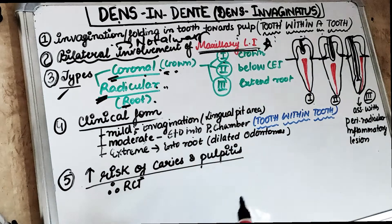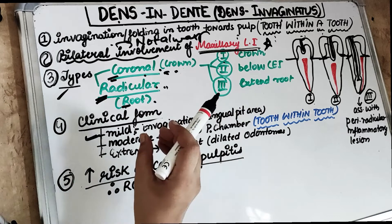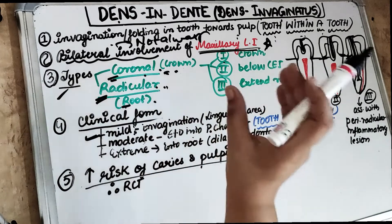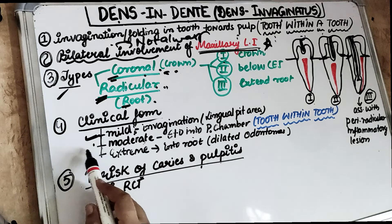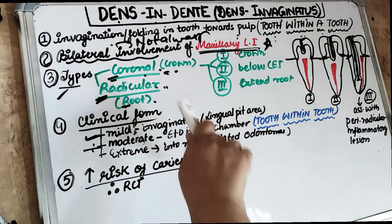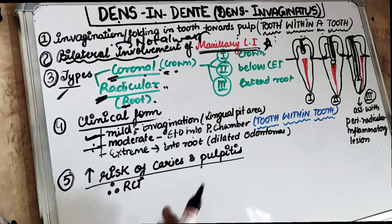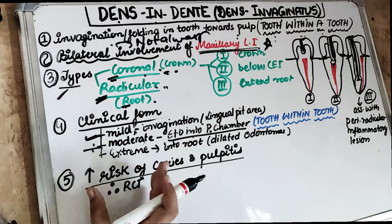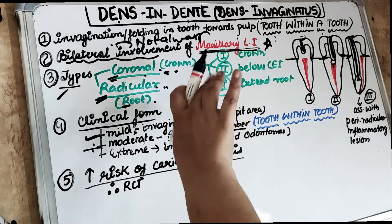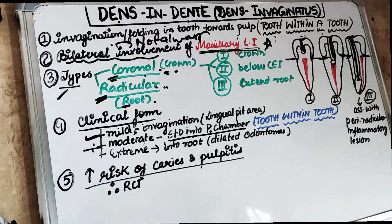Regarding the clinical forms: in mild cases, the invagination is only present or deeply accentuated in the lingual pit area — only the external pit is involved. In moderate cases, the invagination invades into the enamel, dentine, and pulp chamber. In the extreme form, the invagination extends beyond the pulp chamber and involves the root, and this is sometimes called a dilated odontome.